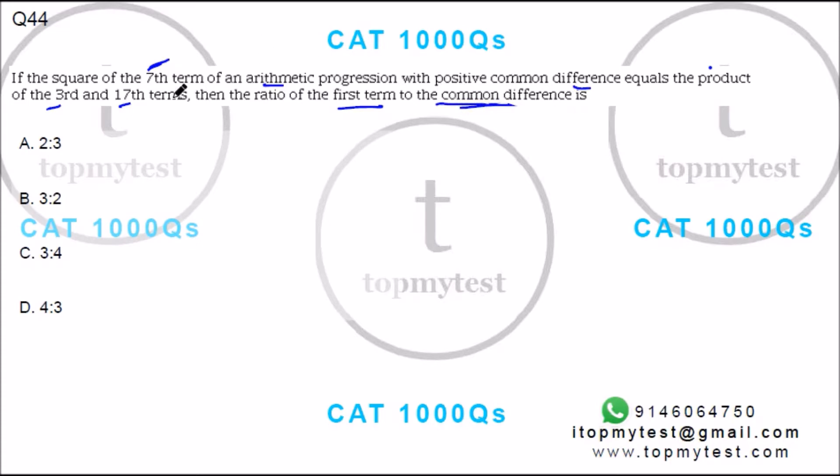The seventh term of an arithmetic progression will be a plus 6d, where a is the first term and d is the common difference. Now, its square equals the product of the third and seventeenth terms.